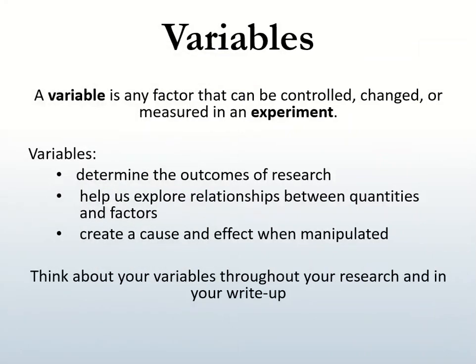A variable is any factor that can be controlled, changed, or measured in an experiment. In our experiment we are often exploring relationships between quantities or factors — we want to see how one variable (the cause) affects another variable (the effect). Because we can manipulate the variables to create a cause and effect, we can make a prediction about the result of our experiment, which is the hypothesis. Variables are central to scientific investigation because they determine the direction and outcome of the research.